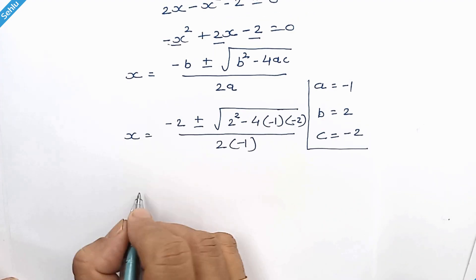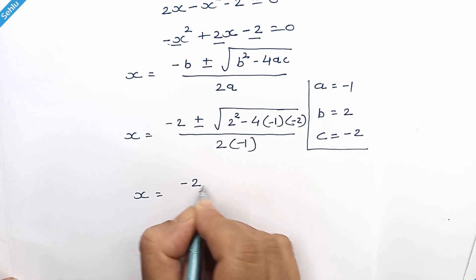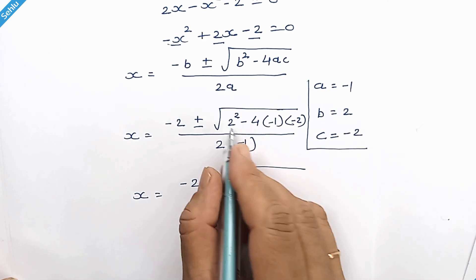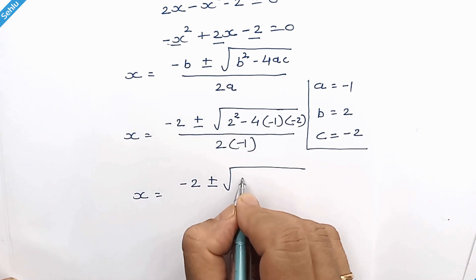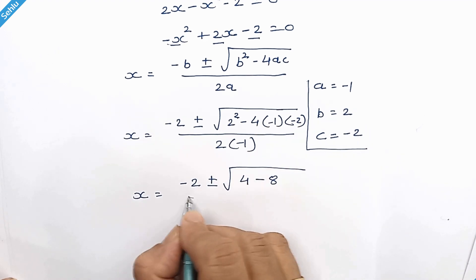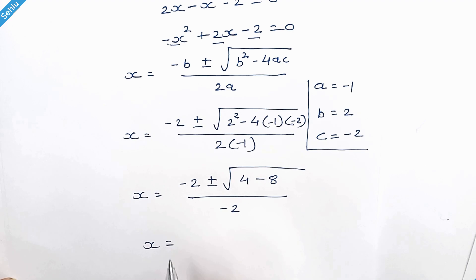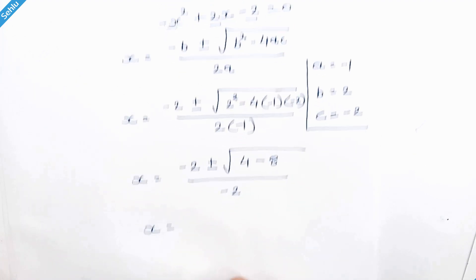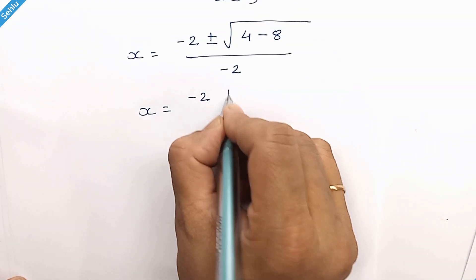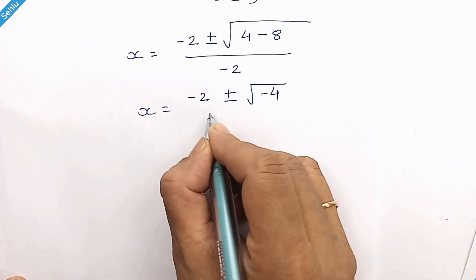So x equals negative 2 plus or minus square root of (2 squared is 4, minus 8), over negative 2. That gives x equals negative 2 plus or minus square root of negative 4, over negative 2.